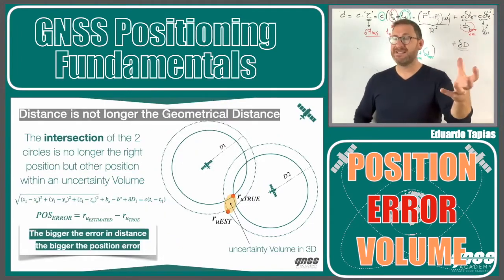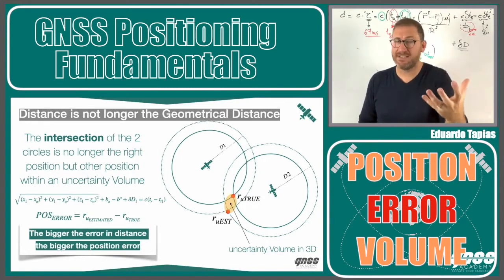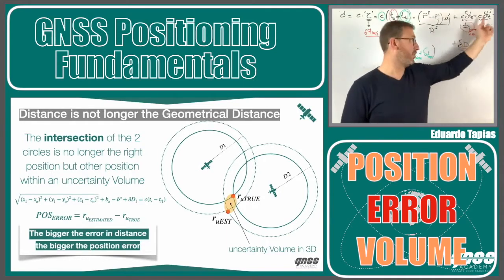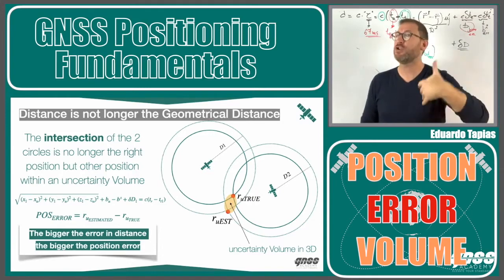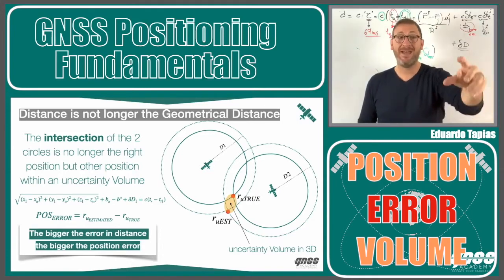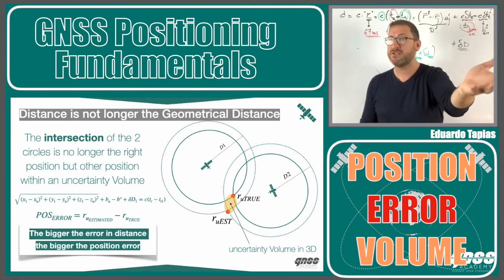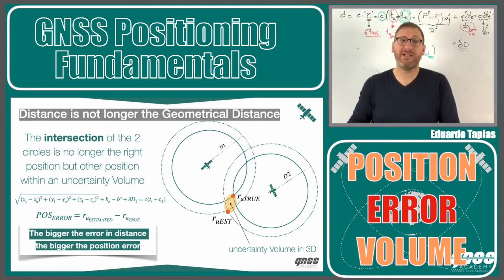If I have a distance that is not really the real distance, because we have a satellite clock at this time, because the signal is not traveling at speed of light, the real intersection between both spheres is not the true position anymore. Now the distance is not a real distance, then we have an uncertainty of error inside my estimation.